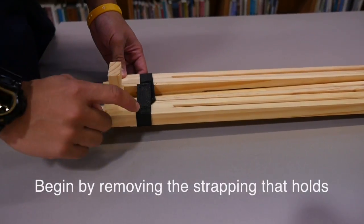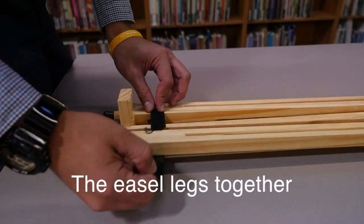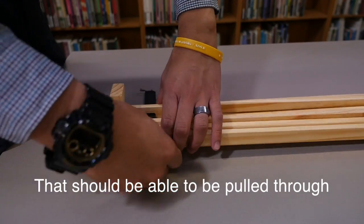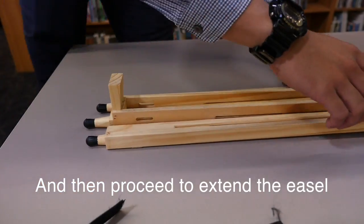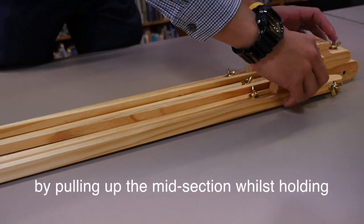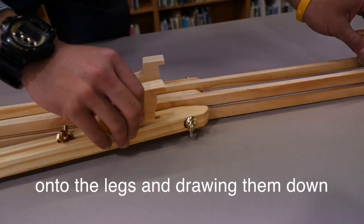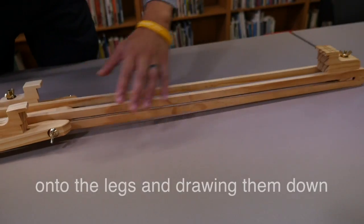Begin by removing the strapping that holds the easel legs together. It should be able to be pulled through. Then proceed to extend the easel by pulling up the midsection whilst holding onto the legs and drawing them down.